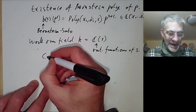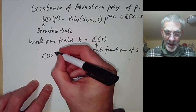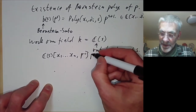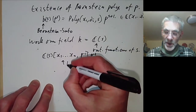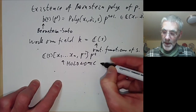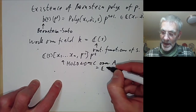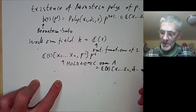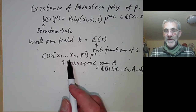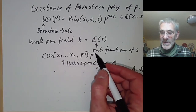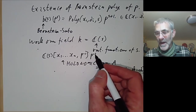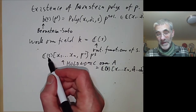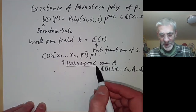We're going to cheat a little bit: we proved results about the Weyl algebra over the complex numbers, but everything works for the Weyl algebra over any characteristic zero field, such as C(s). We take the field C(s) and look at all polynomials C(s)[x1, ..., xn] with p^{-1} adjoined, and we multiply by p^{-s}. We say this is holonomic over the Weyl algebra A, which now is defined over the field of rational functions in s with variables x1, ..., xn, ∂_1, ..., ∂_n. This follows from the previous lemma — the extra factor of p^{-s} doesn't affect the proof, and working over C(s) rather than C doesn't matter either.